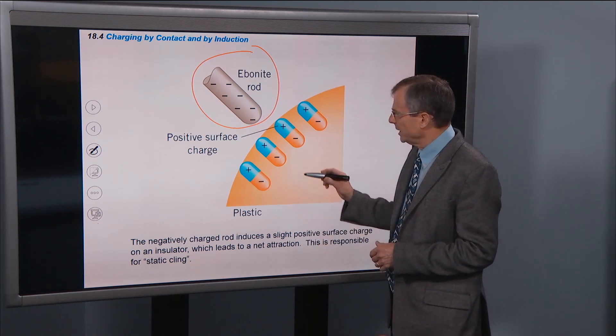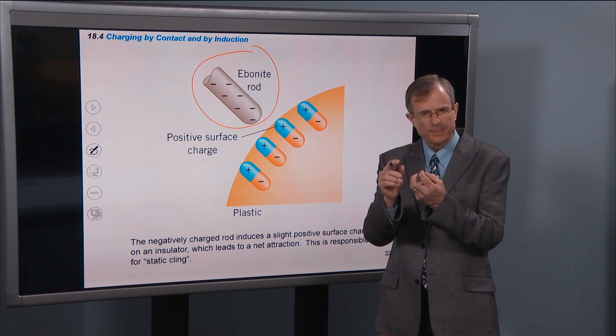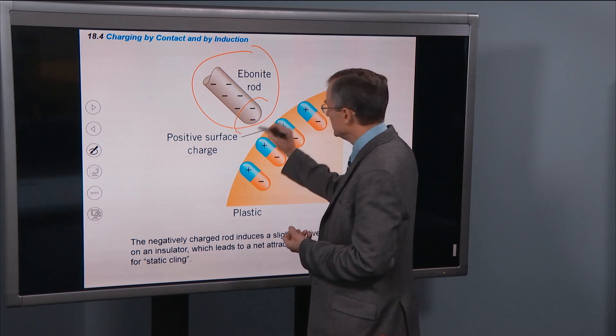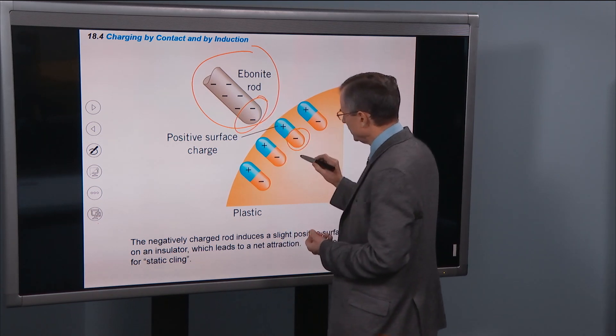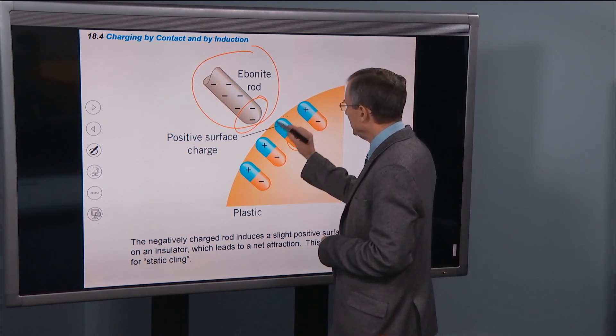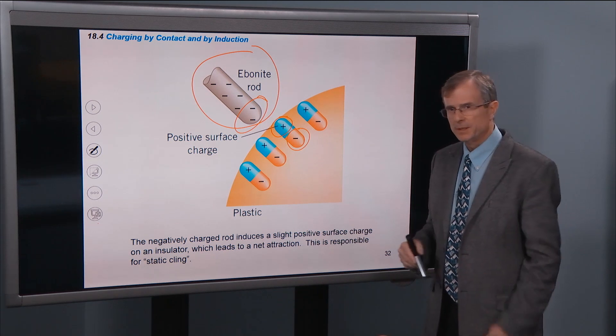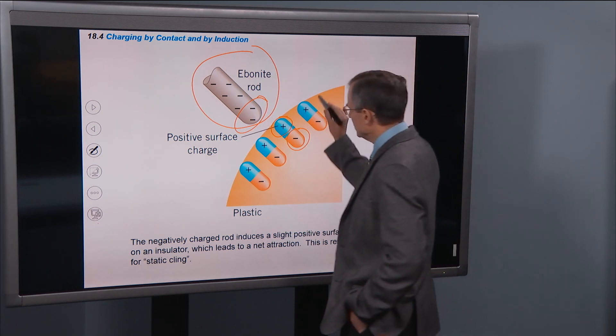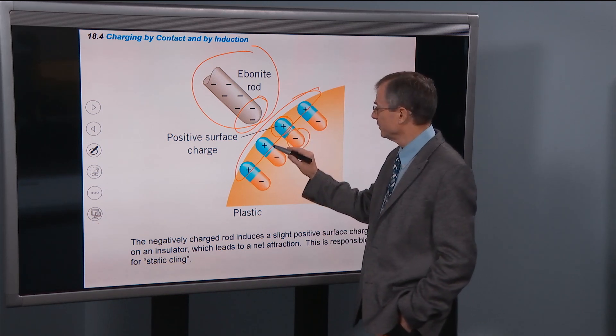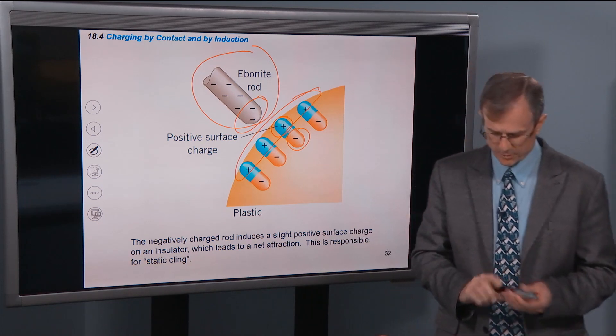Then what happens is that in an insulator the electrons aren't able to move around. But what they do is that the atoms that have electrons bound to them, the electrons are repelled by this negative charge here. So the electrons in the atoms themselves get pushed over on one side of the atoms, leaving the core nuclei exposed on the surface. So this creates a surface that's positively charged, and that positively charged surface actually attracts the negative rod, and that's what's responsible for static cling.